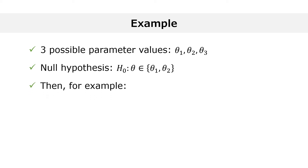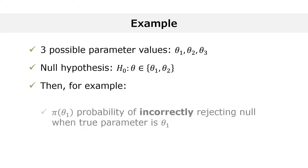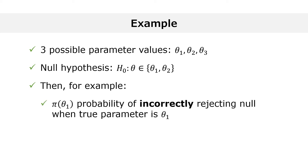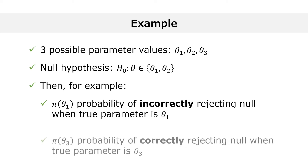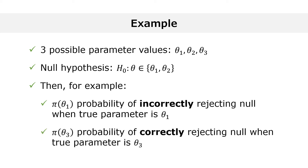Then, for example, pi of theta 1 is the probability of incorrectly rejecting the null hypothesis when the true parameter value is equal to theta 1. Pi of theta 3 is the probability of correctly rejecting the null hypothesis when the true parameter value is equal to theta 3.